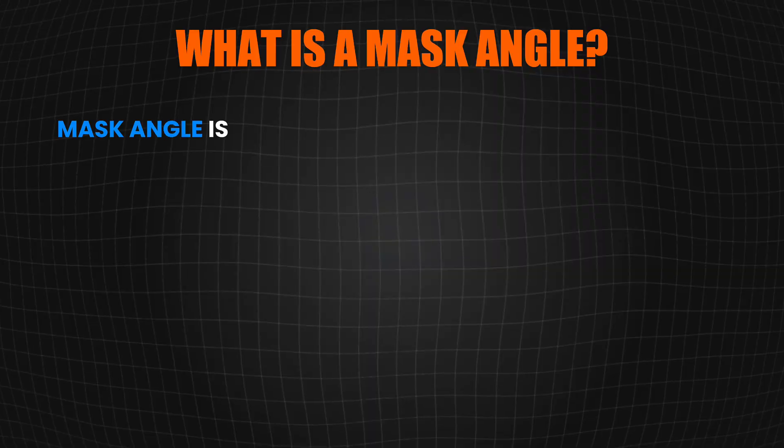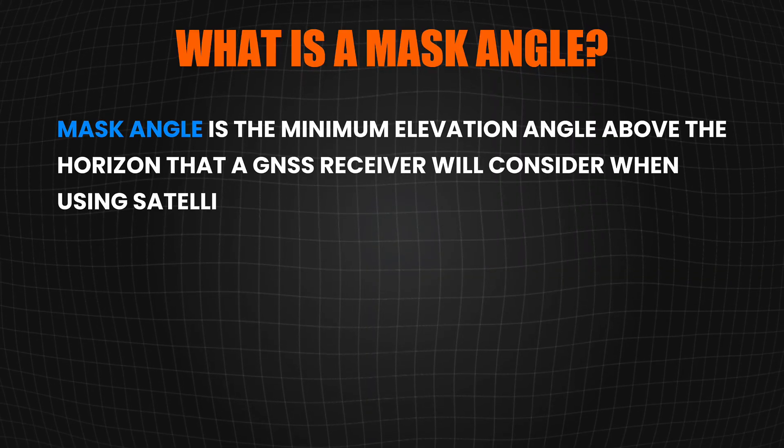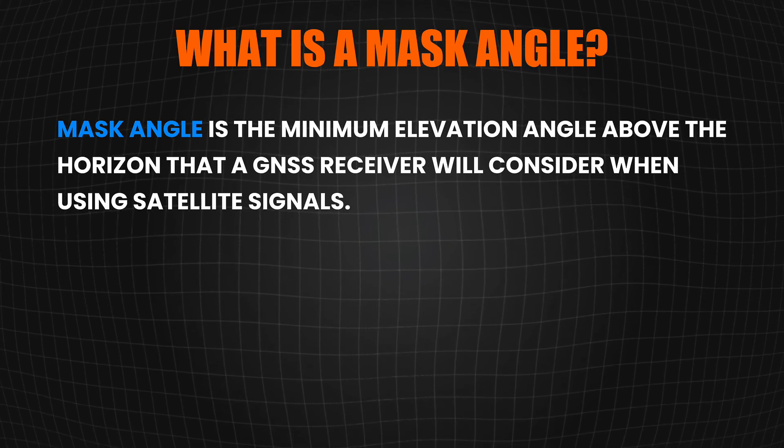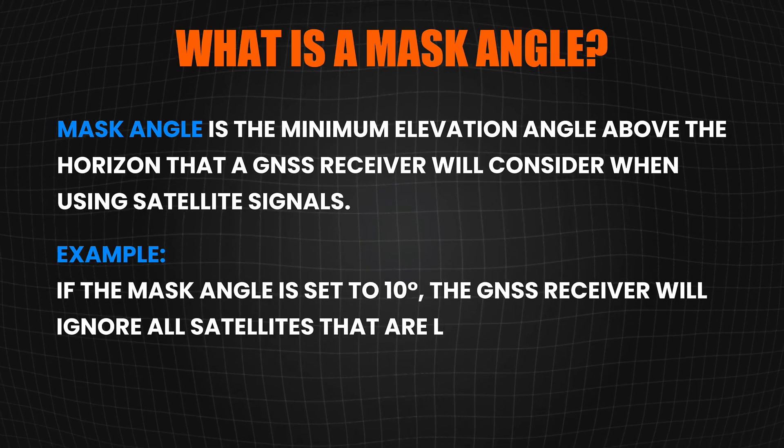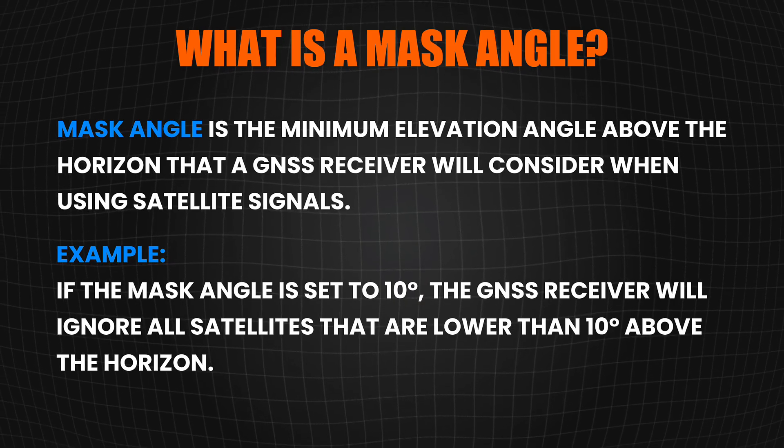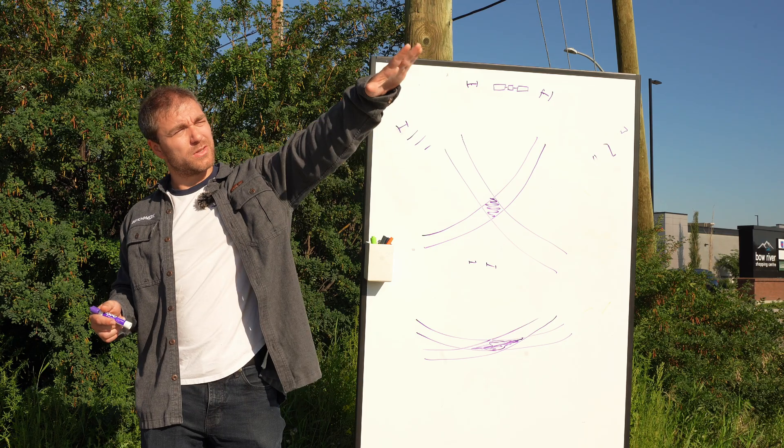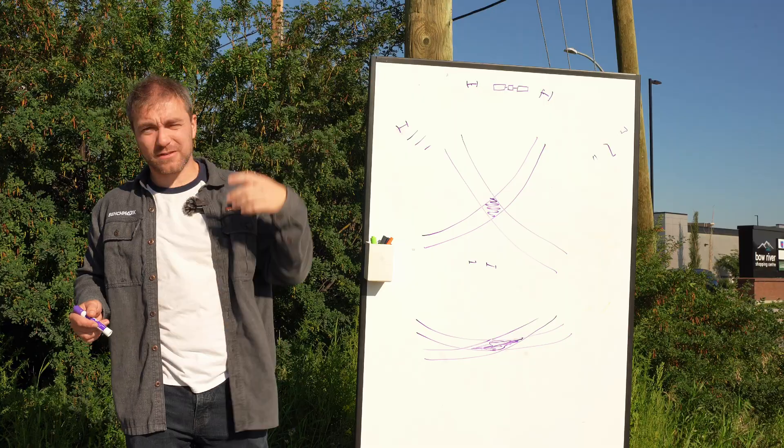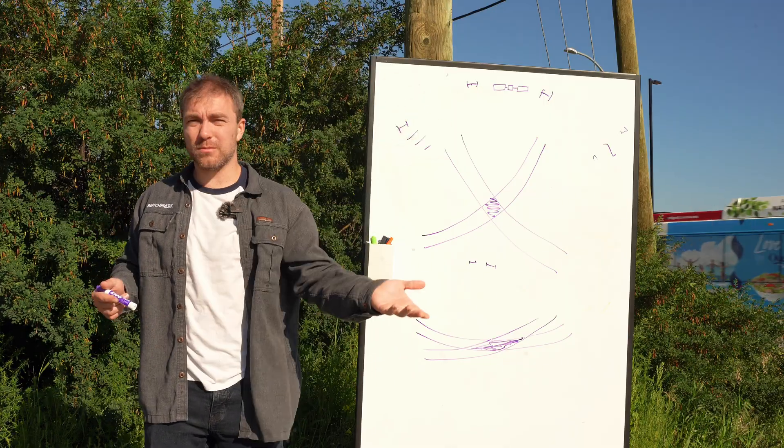So a mask angle is when you cut off any satellite below a certain degrees above the horizon. So normally we set it to 10. You don't want any satellite below 10 because there's too much interference. It's going through too much atmosphere. There's too much air there. But when you start to set it up to like 45, 55 degrees, then you start cutting off most of your satellites.